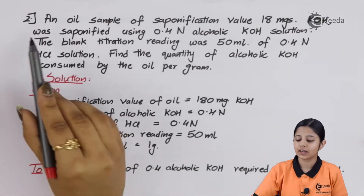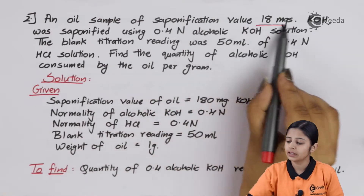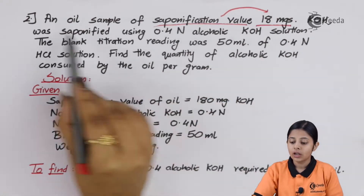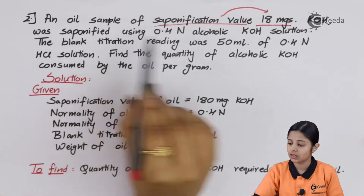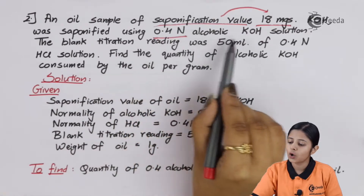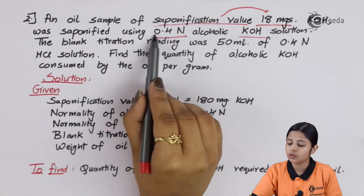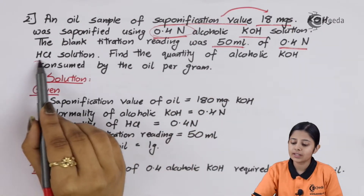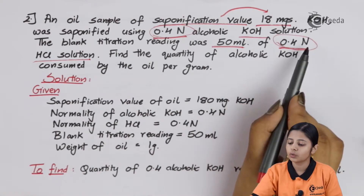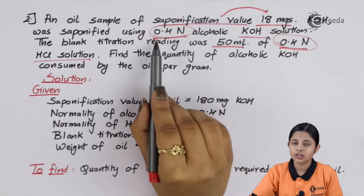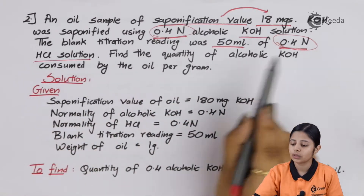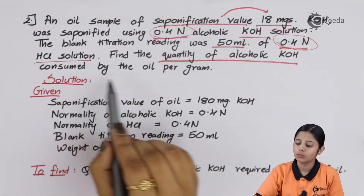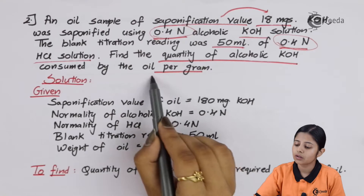Now the second question. An oil sample has a saponification value of 180 mg — so the saponification value is already given. The oil was saponified using 0.4 N alcoholic KOH. The blank titration reading was 50 ml of 0.4 N HCl solution. Both the KOH and HCl solutions have the same normality of 0.4. We need to find the quantity of alcoholic KOH consumed by the oil per gram.